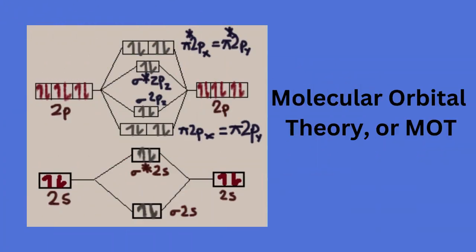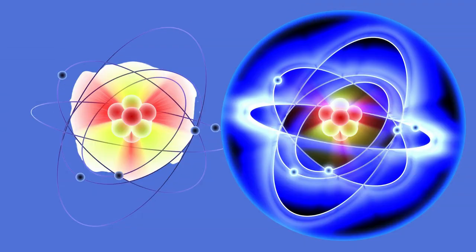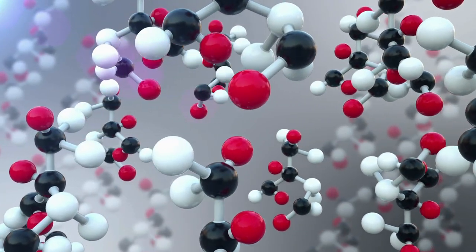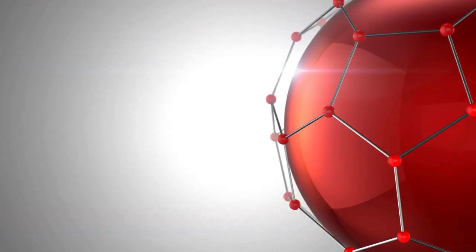Next up is the molecular orbital theory. Developed later, it provides a different approach. Instead of thinking of electrons being shared between just two atoms, it treats electrons as delocalized over the entire molecule. Atomic orbitals combine to form molecular orbitals that extend over the entire molecule, providing a more complete picture of electron distribution.